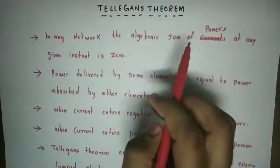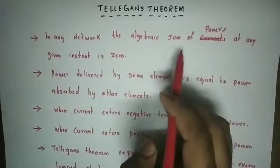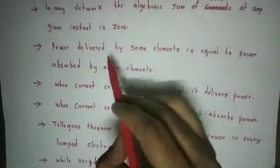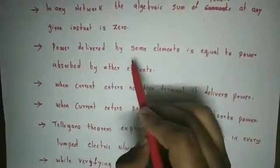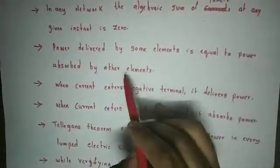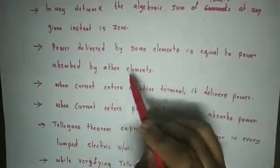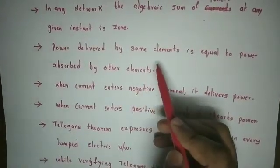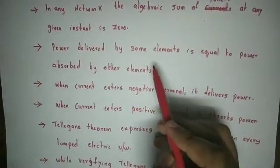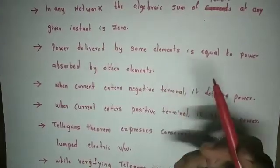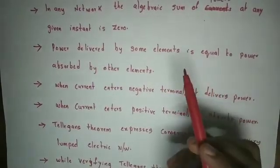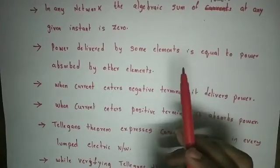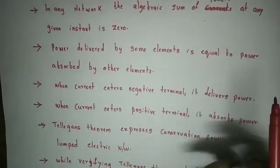The second point: power delivered by some elements is equal to power absorbed by other elements. This is Tellegen's theorem, also called conservation of power. Power is not created — some elements deliver power and other elements absorb it.